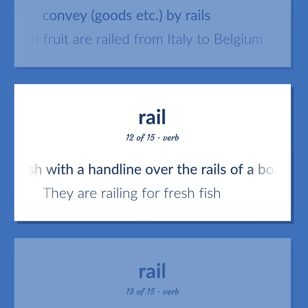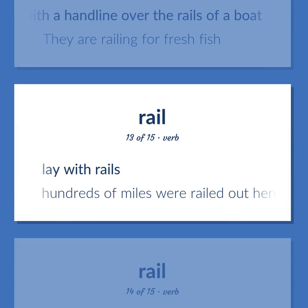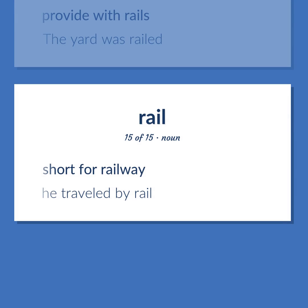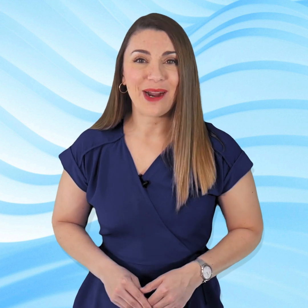Rail (verb): Fish with a hand line over the rails of a boat — they are railing for fresh fish. Lay with rails — hundreds of miles were railed out here. Provide with rails — the yard was railed. Short for railway — he traveled by rail.